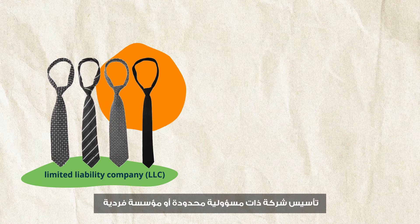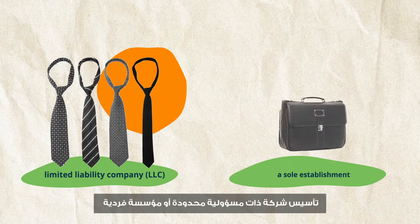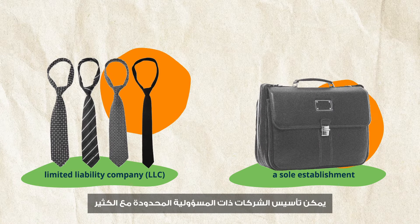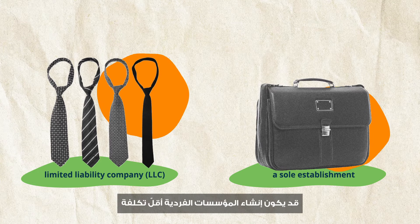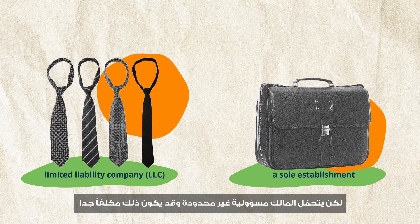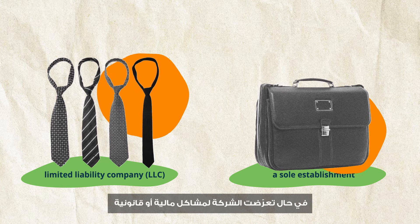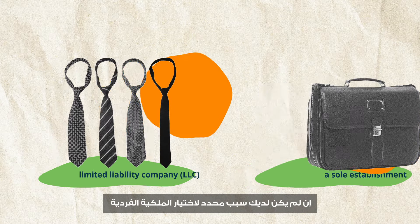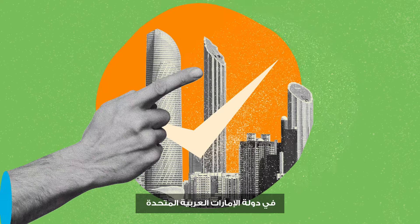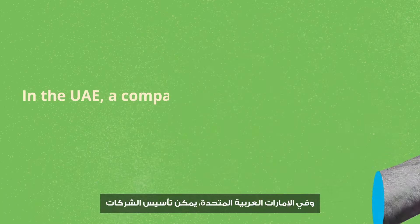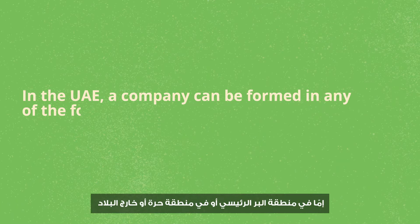Generally, you have two main options: forming a Limited Liability Company (LLC) or setting up a sole establishment. LLCs can be formed with multiple shareholders; sole establishments cannot. Sole establishments can be cheaper to set up but have unlimited liability for the owner, which could be very costly if they run into financial or legal trouble. Unless you have a specific reason for choosing sole proprietorship, setting up an LLC is likely your best option and is generally the most popular business setup in the UAE.